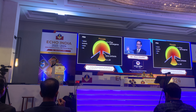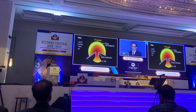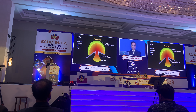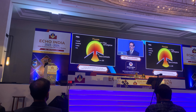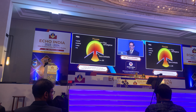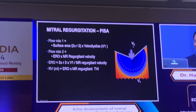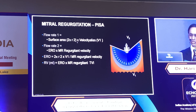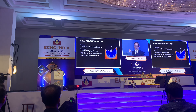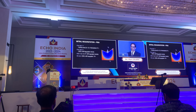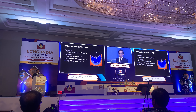The third method is called proximal isovelocity surface area (PISA). Flow accelerates towards the regurgitant orifice. If you shift the baseline you see the flow convergence zones — essentially applying the continuity method at the level of the valve. You can see these convergence zones look like a hemisphere, so you can say flow rate from one side equals flow rate on the other. Two pi r squared times velocity gives the flow rate, and the unknown is the effective regurgitation orifice area (ERO).